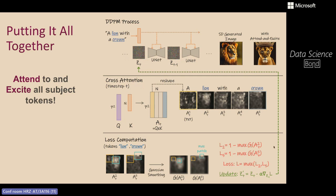We call it Generative Semantic Nursing because each step slightly shifts ZT. We don't want to cause an out-of-distribution latent ZT, so we don't shift it too much. Instead, we gradually shift the latent at each time step as the denoising process occurs.